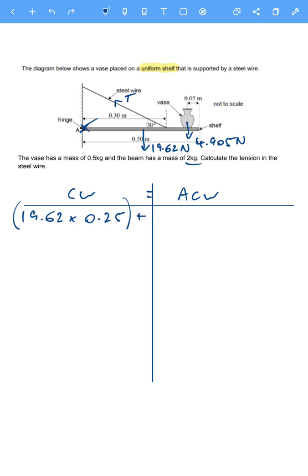Plus we've got the second one, which is the vase, which acts clockwise as well. The weight is 0.5 kilograms, which is 4.905 newtons. So 4.905 newtons multiplied by the distance. The distance to that one is the full distance, the 0.5, subtract the 0.05. So 0.5 minus 0.05 gives us 0.45. That's the clockwise done.